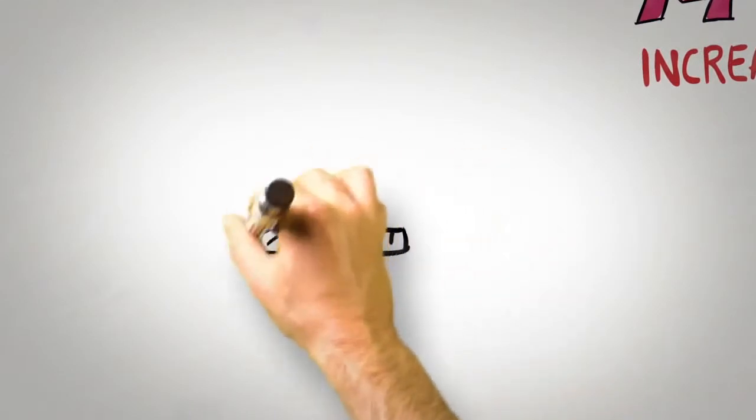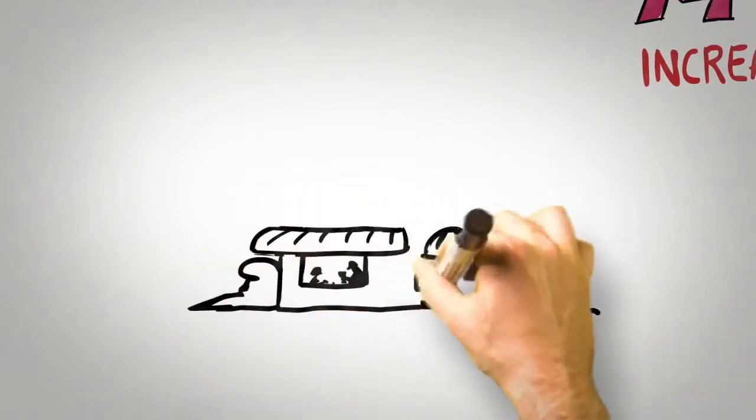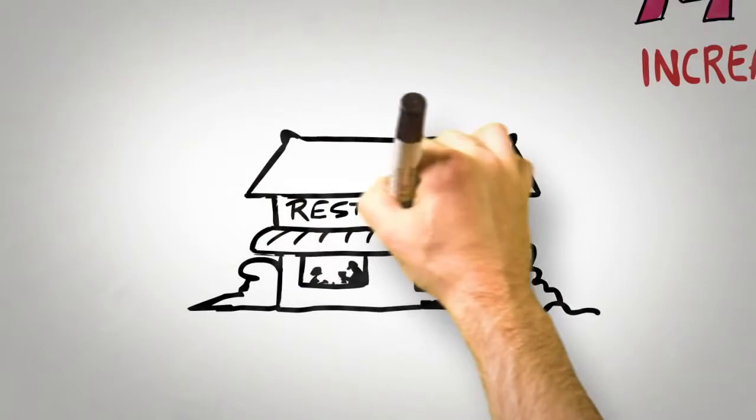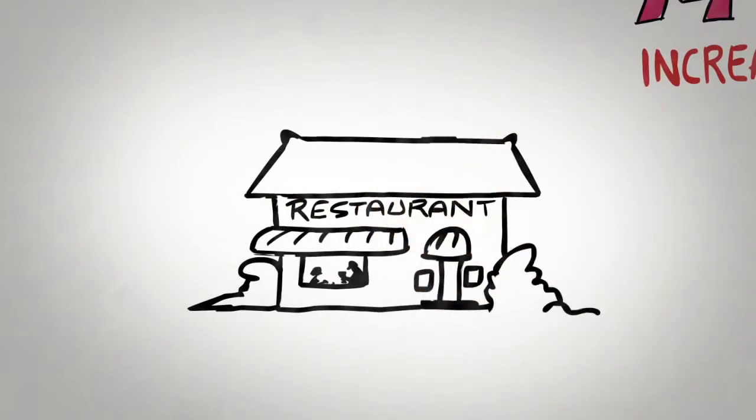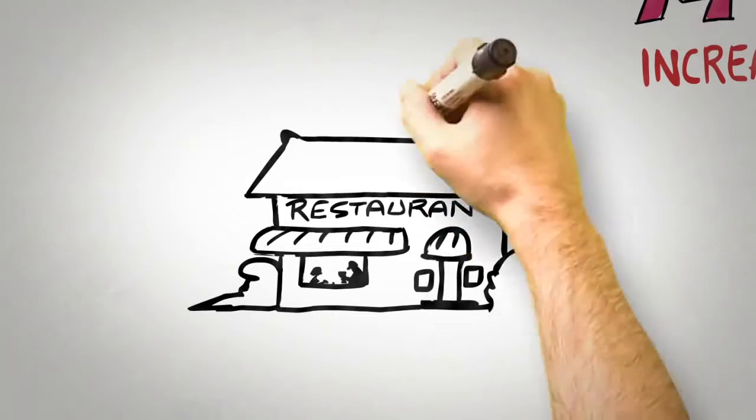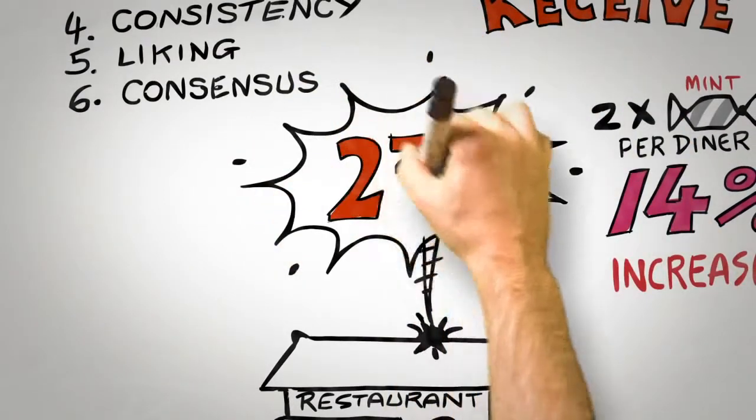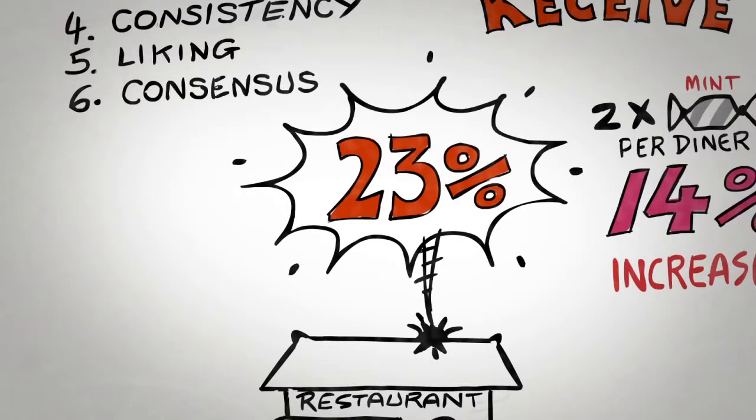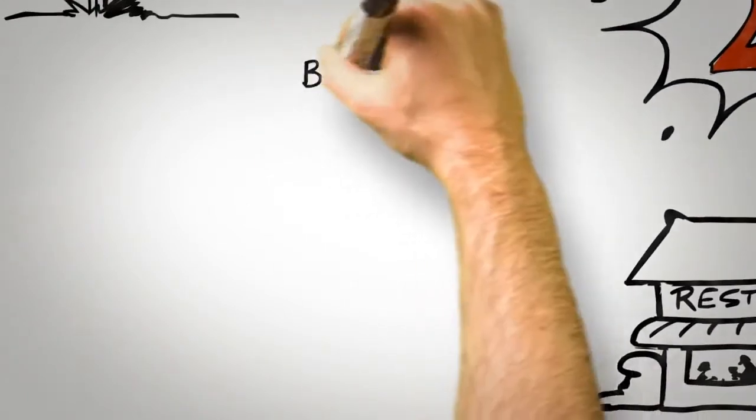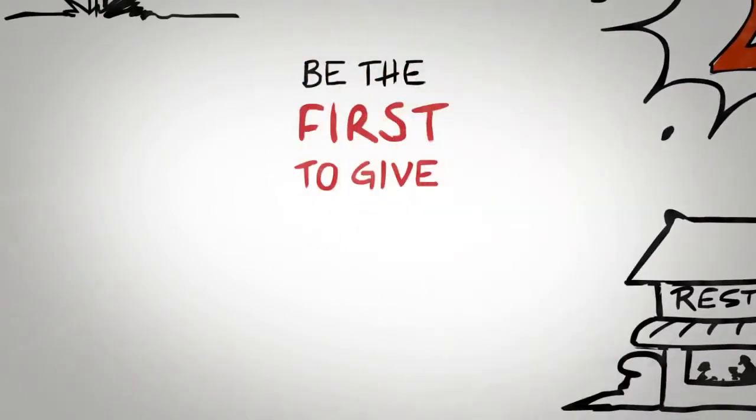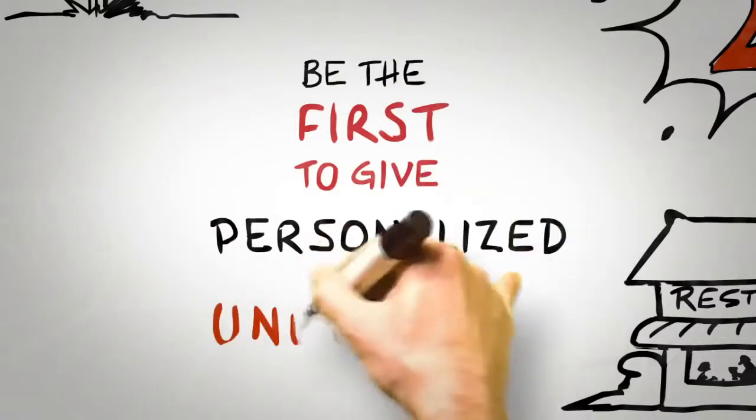But perhaps most interestingly of all is the fact that if the waiter provides one mint, starts to walk away from the table, but pauses, turns back, and says, 'for you nice people, here's an extra mint,' tips go through the roof. A 23% increase, influenced not by what was given, but how it was given. So the key to using the principle of reciprocation is to be the first to give and to ensure that what you give is personalized and unexpected.